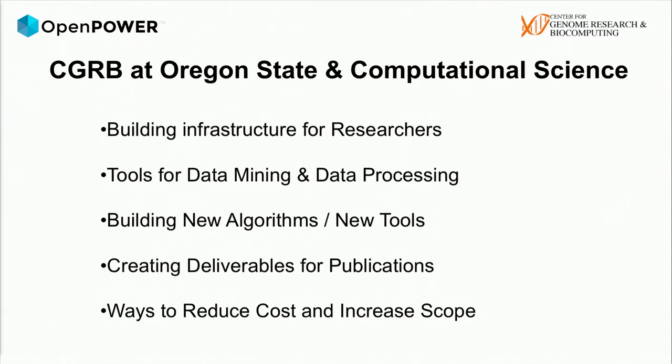The CGRB works very hard with 26 departments at Oregon State University to build infrastructure for researchers, which is different than a standard infrastructure. Most infrastructures apply lots of policy, and policy affects the research question in a negative way — it changes the scope and introduces a bias. We help them create tools for data mining and data processing, build new algorithms, and create lots of deliverables. One of the main things we're here to talk about is reducing cost and increasing the scope, and that's what the Power Platform gave us.